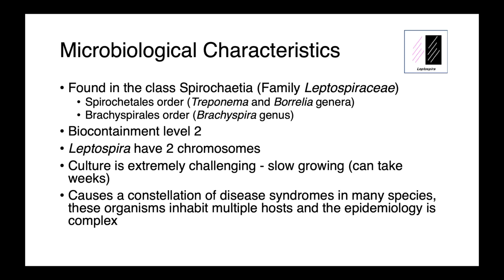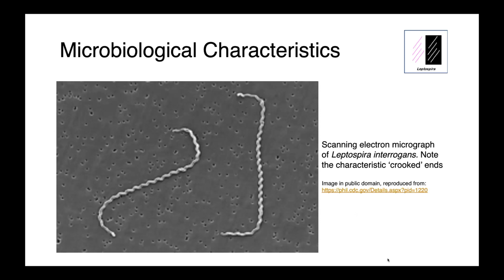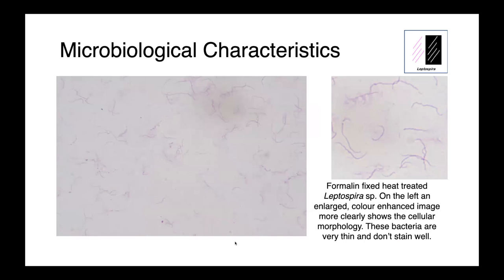These organisms cause a constellation of disease syndromes in many species. We find them in multiple hosts with environmental reservoirs, and they make their way into the water, so the epidemiology can be quite complex. In scanning electron micrographs, Leptospira interrogans are spiral-shaped or corkscrew-shaped organisms with characteristic crooked ends. These are really thin bacteria that don't stain well, and so they can be difficult to visualize without specialized staining techniques or dark field microscopy.